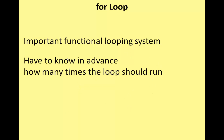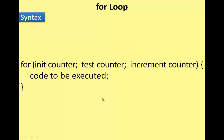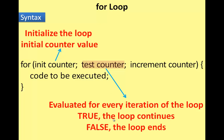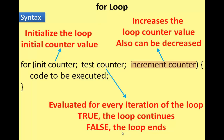Looping structure — how many times? For example, the for loop. The initial value is set, then a test counter checks the condition. If the condition is true or false, the loop runs. An increment counter increases or decreases the value. The loop changes condition, and if it becomes false, the loop ends.